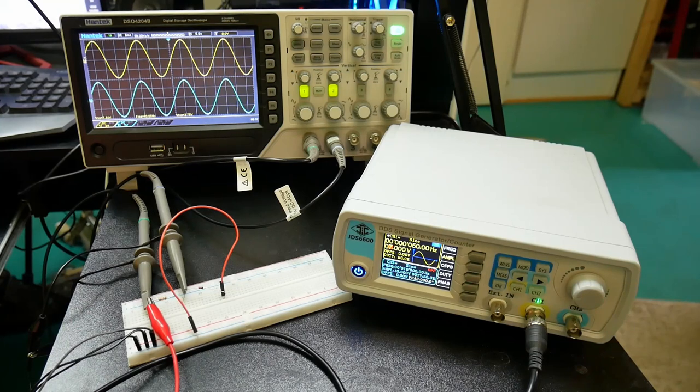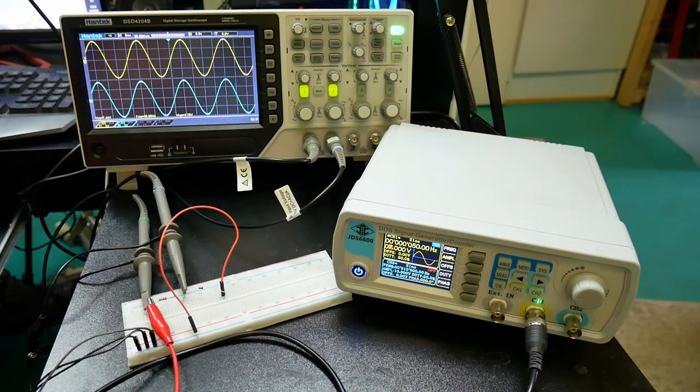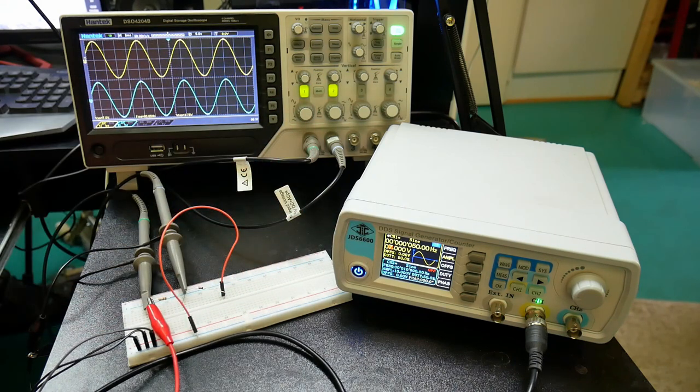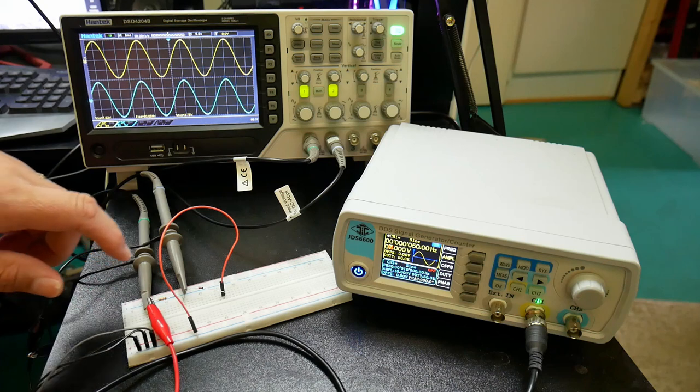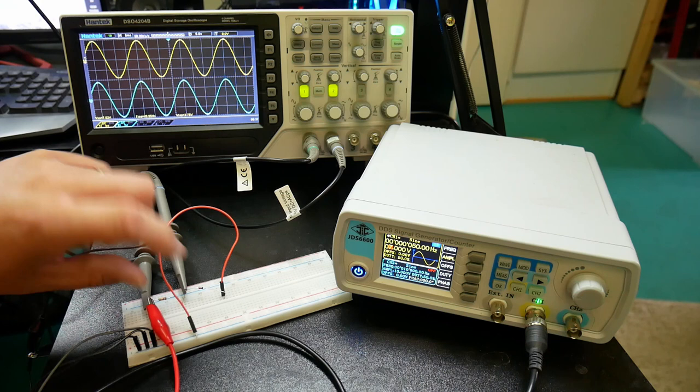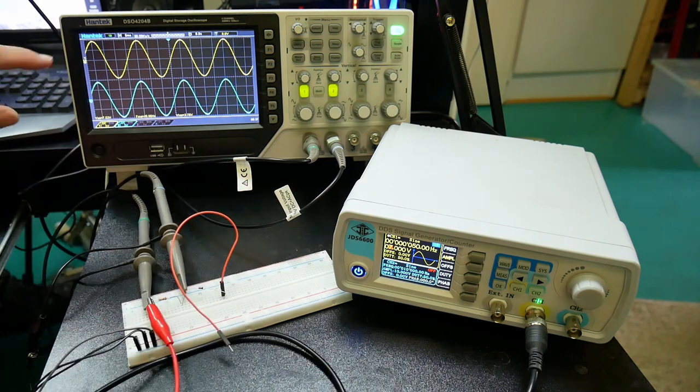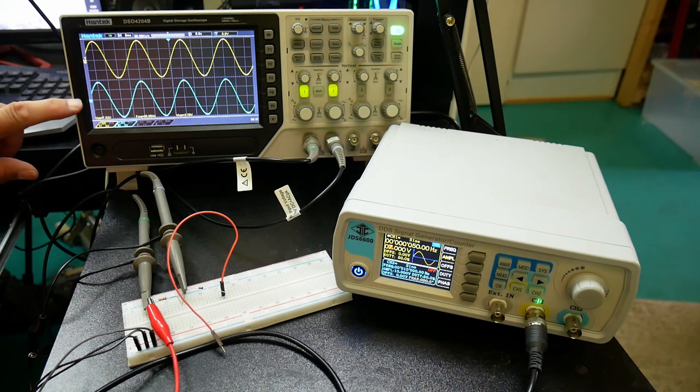So now we look at voltage clamping and in this example we have a single generator generating 7 volt peak to peak and 50 Hertz, a resistor and a diode which is now actually hanging in the air so it's not connected to it. And here we see the input and here we see the output.